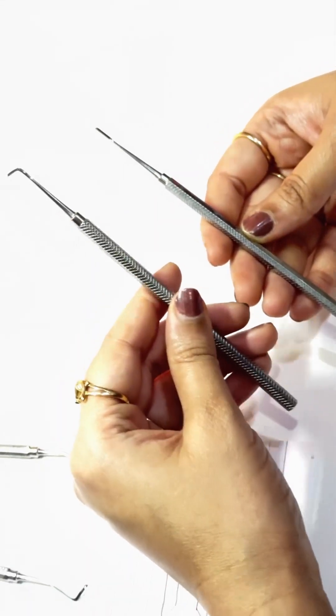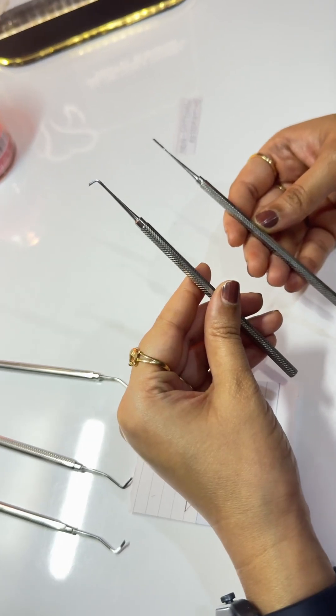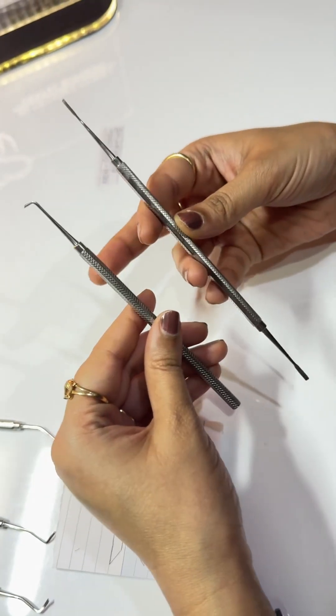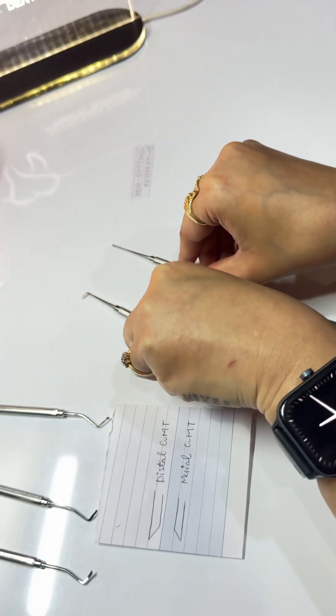The first instrument, the Ho, is used with a pull stroke, and the chisel is used with a push stroke.